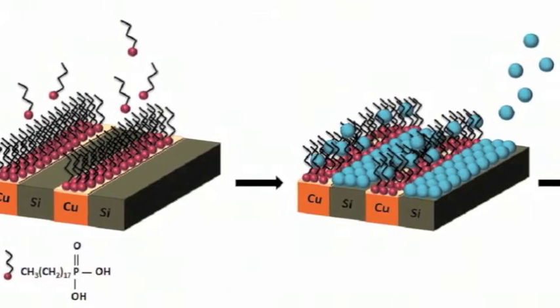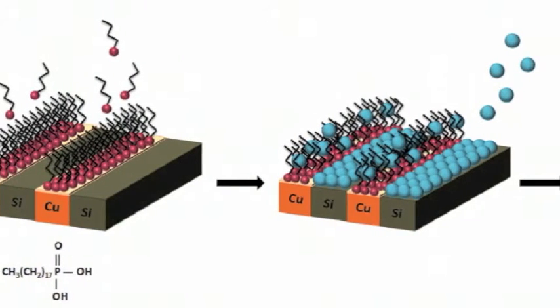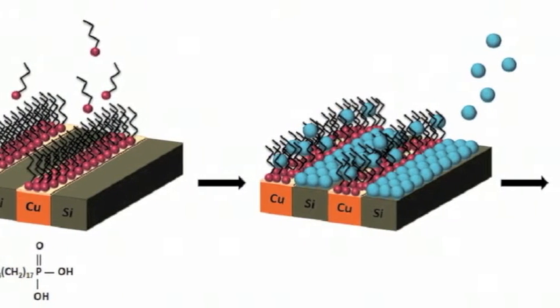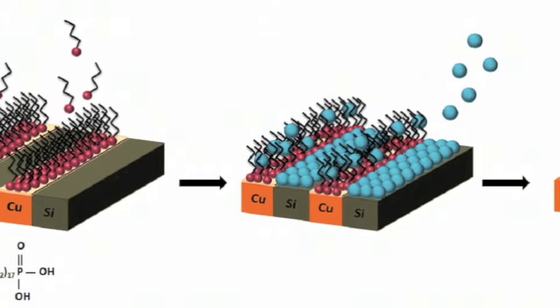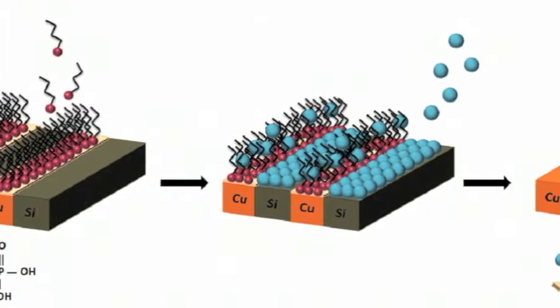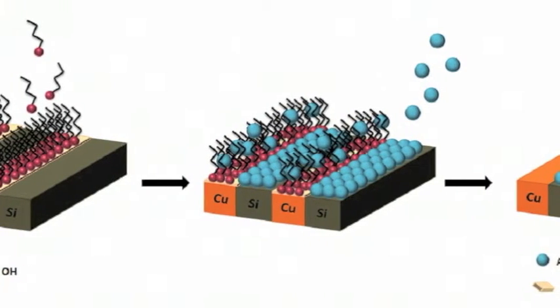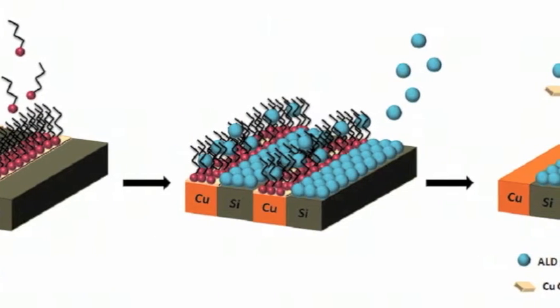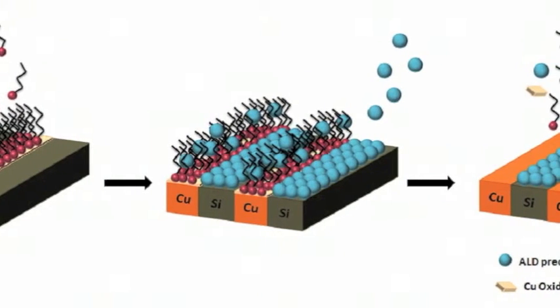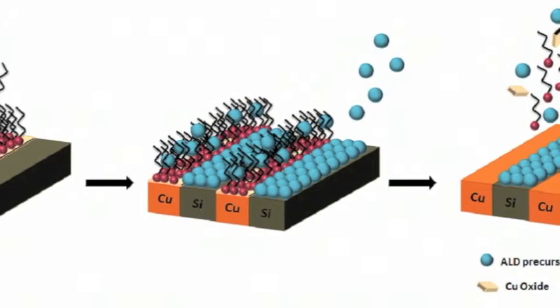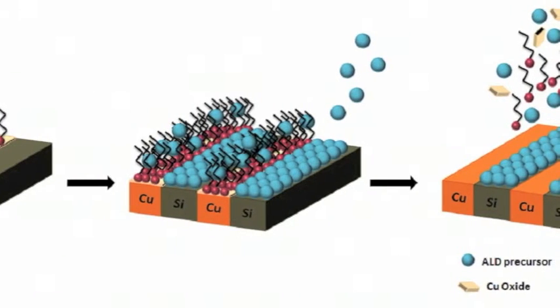After about 50 cycles of ALD, we lose selectivity due to the fact that we have created pinholes in the SAMs. We eventually get growth of ALD on all areas of the sample. However, if after this deposition, we sonicate the samples in acetic acid, which is a mild etchant...